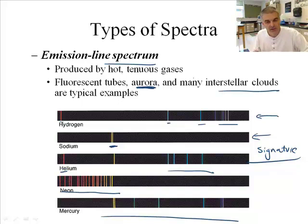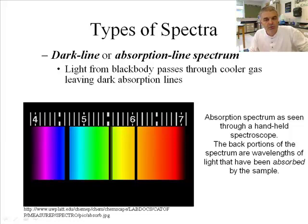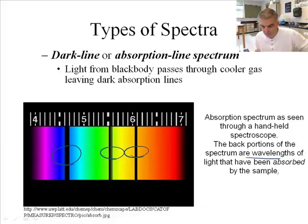And then lastly, there is what we call the dark line or absorption line spectrum. And that's where the light from a black body passes through cooler gases, leaving dark absorption lines. So, we can see the absorption lines. You kind of have a continuous spectrum, but with some gaps. Not lots of, you know, that's exactly what it is. And the black portions are the wavelengths that have been absorbed.